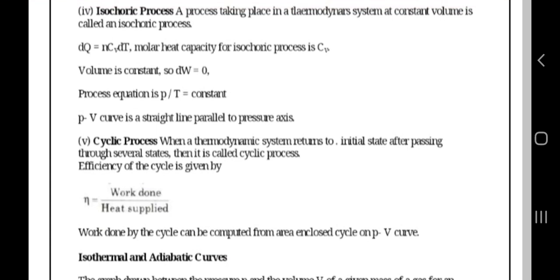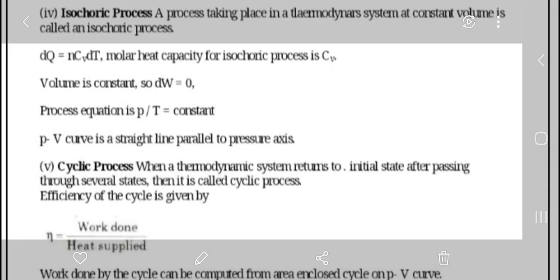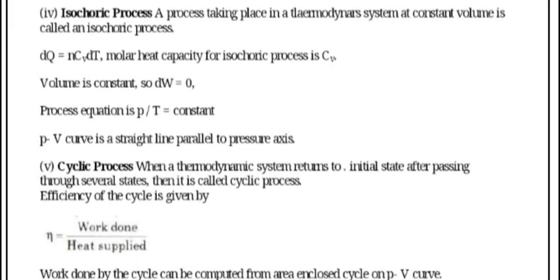Isochoric process: A process taking place in a thermodynamic system at constant volume is called an isochoric process. The molar heat capacity for isochoric process is Cv.